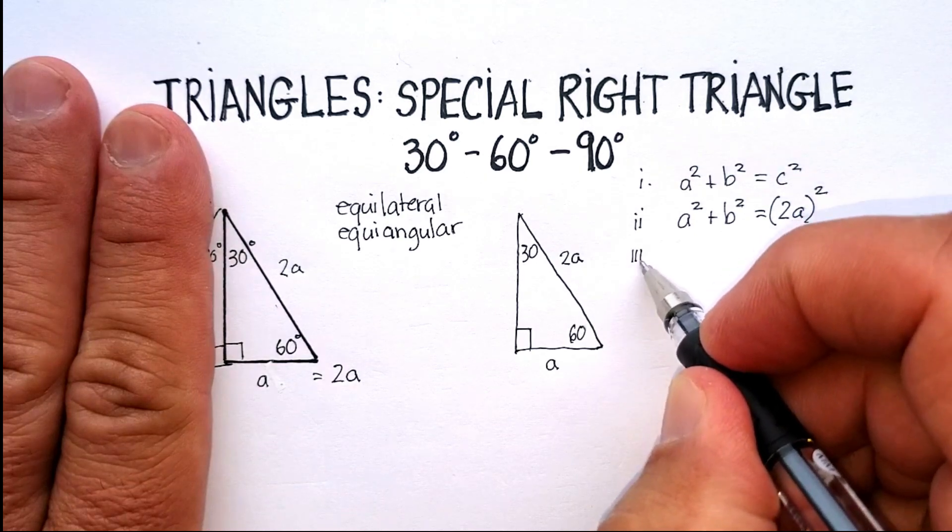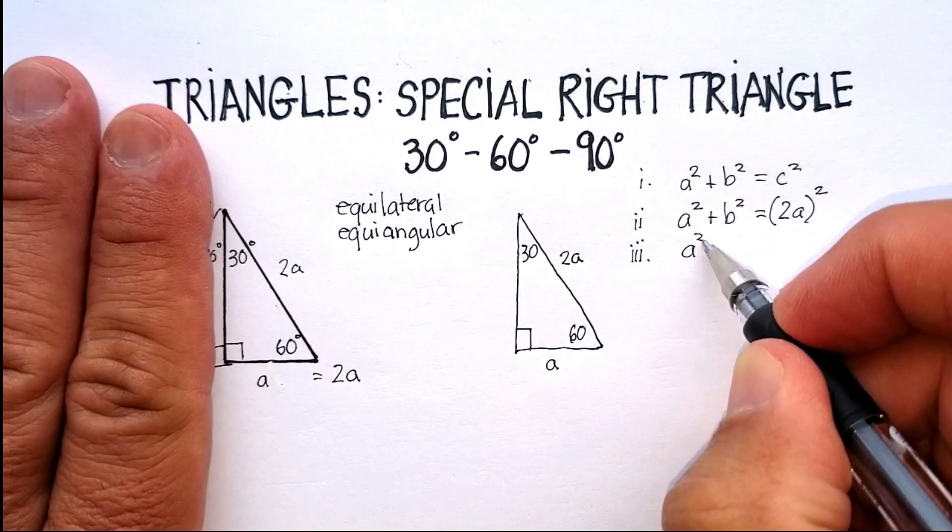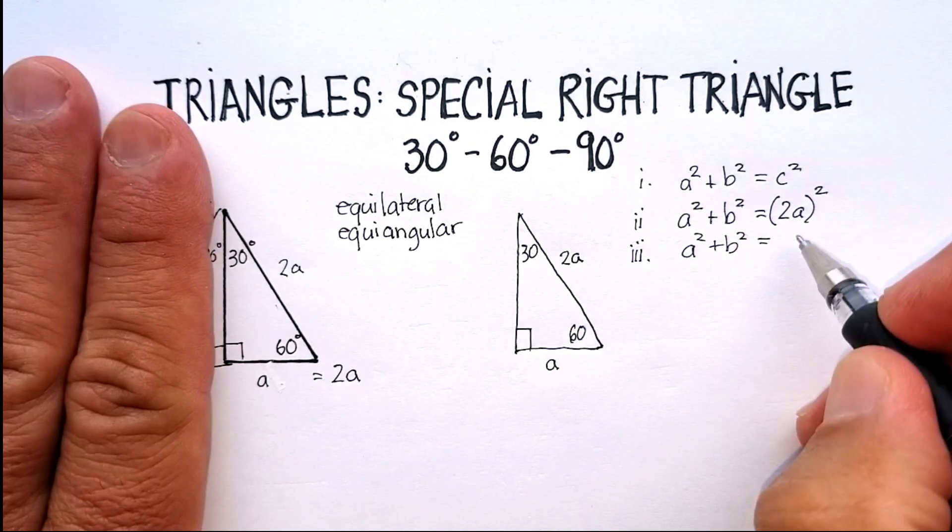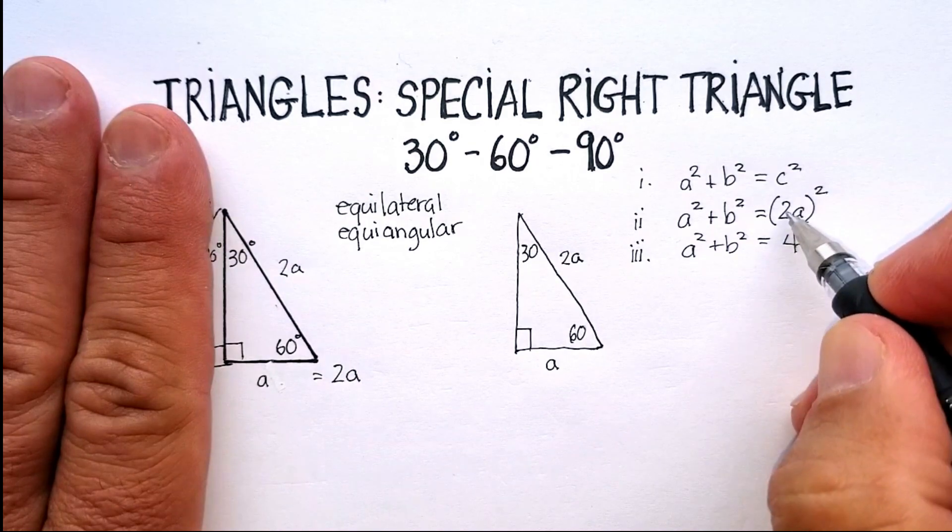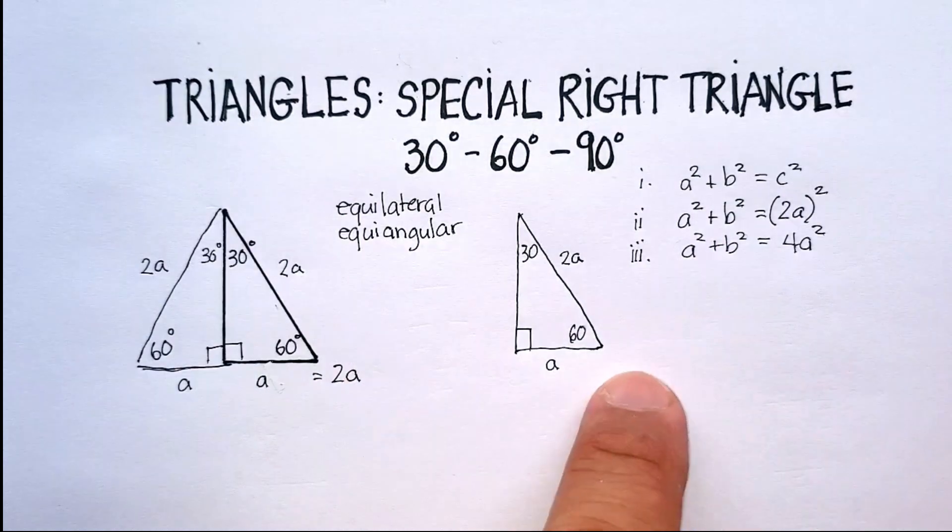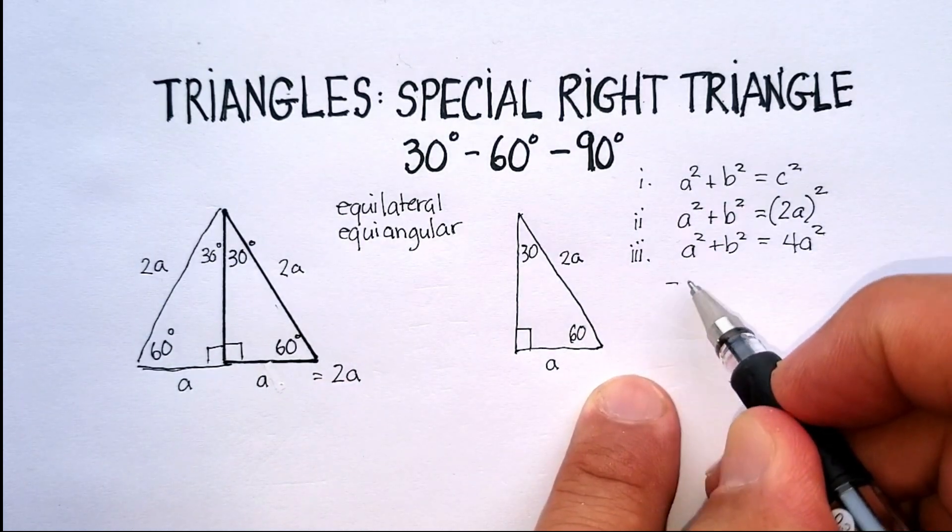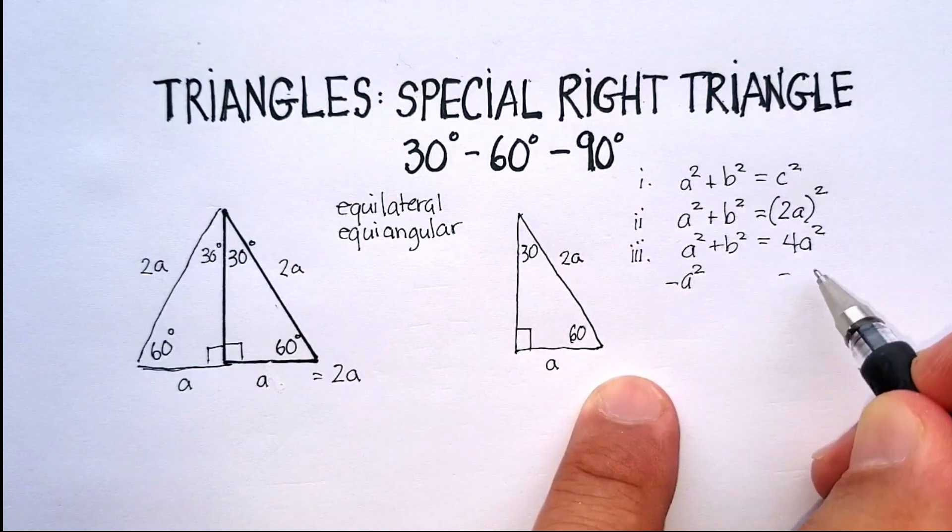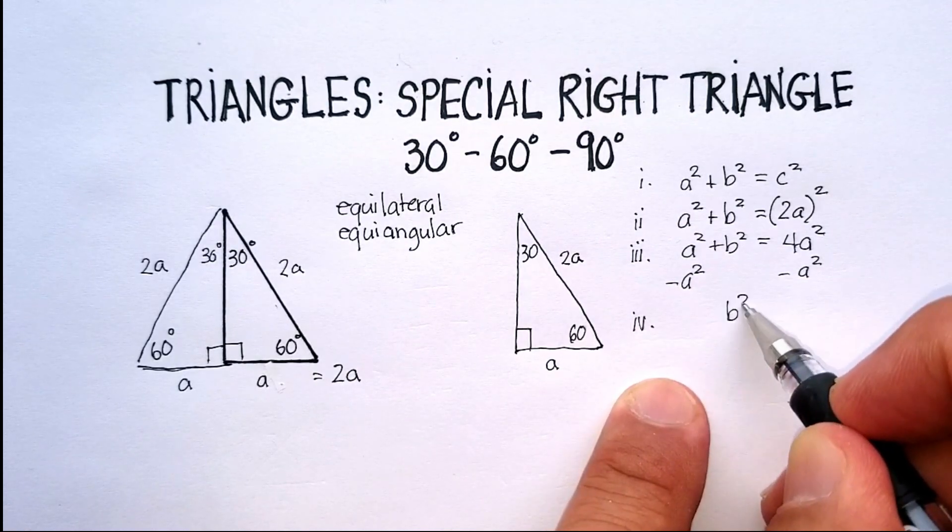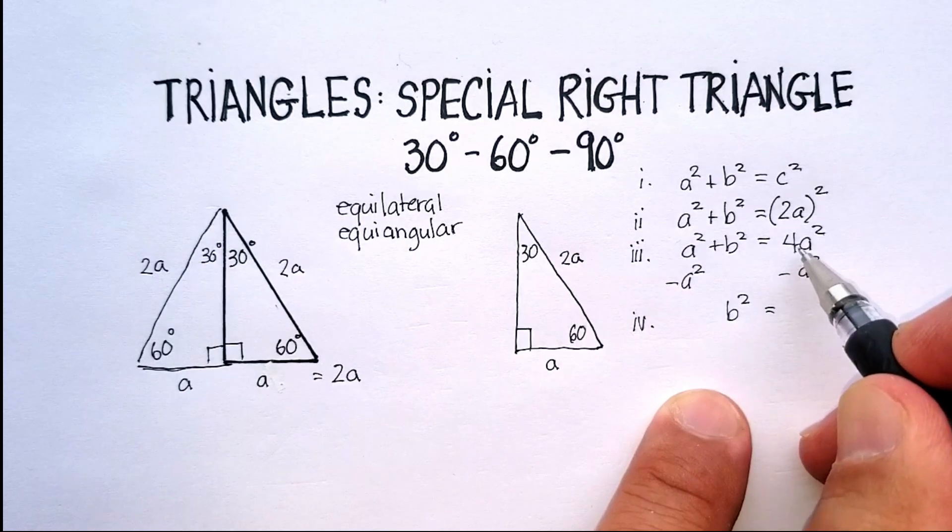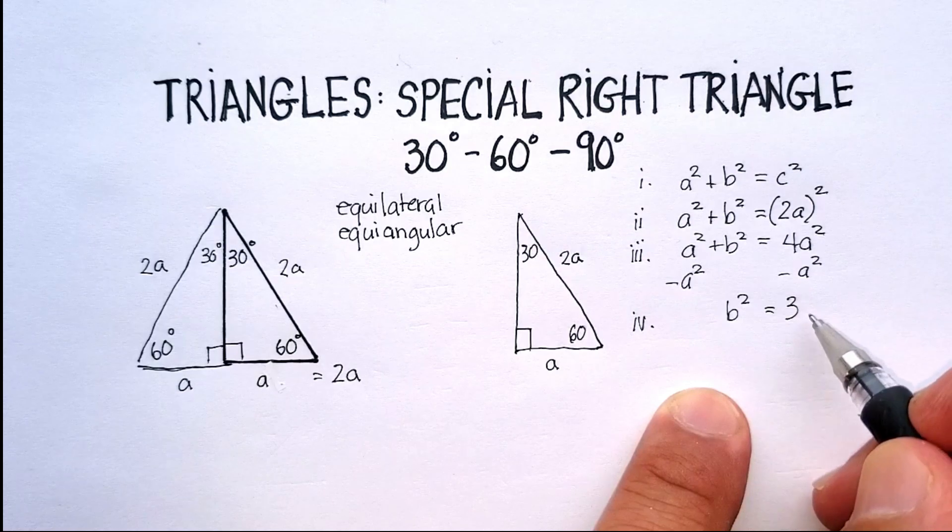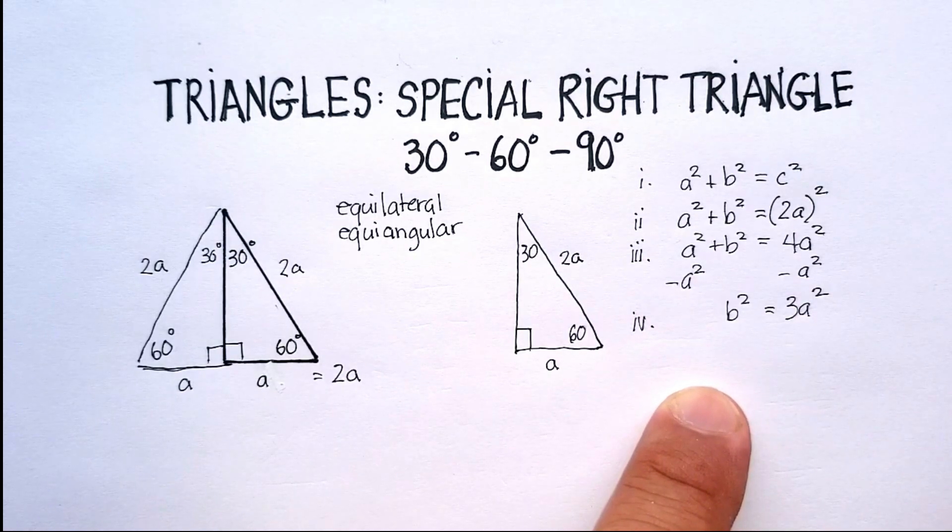So let's work this out. A squared plus B squared, let's square 2A, and you should get 4, because you square that and you square that, 4A squared. I'm going to subtract A squared from both sides. And that's going to give me B squared is equal to 3A squared. Excuse me, 4A squared minus 1A squared is 3A squared.